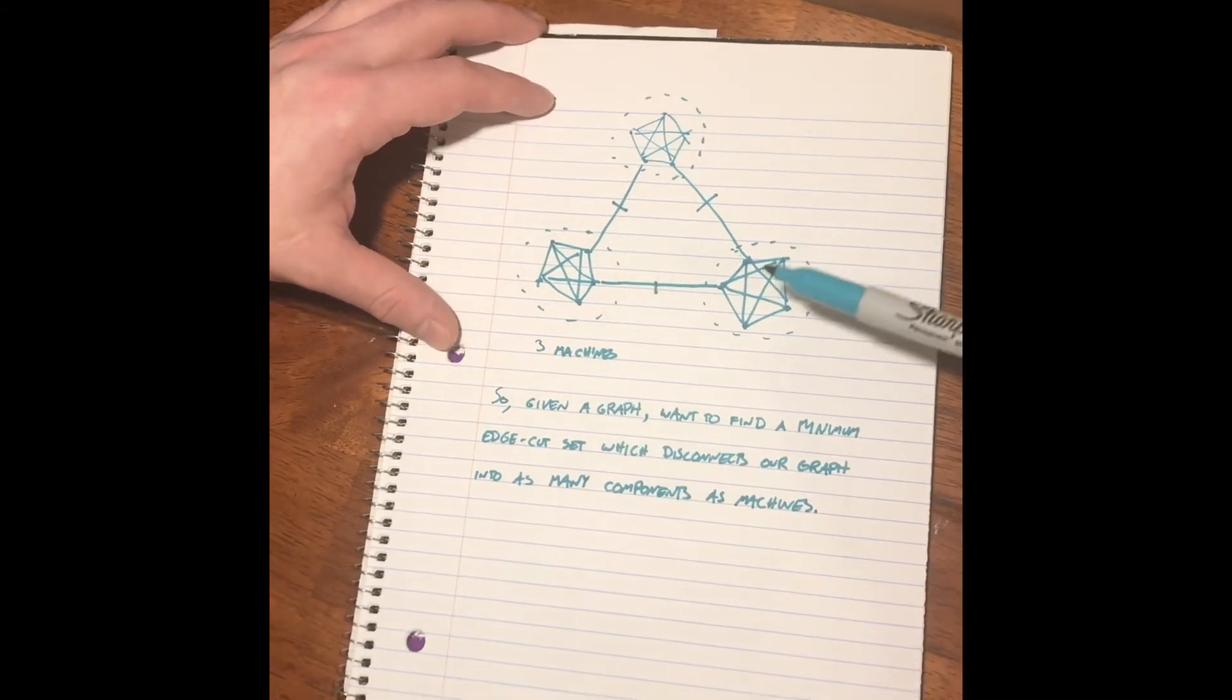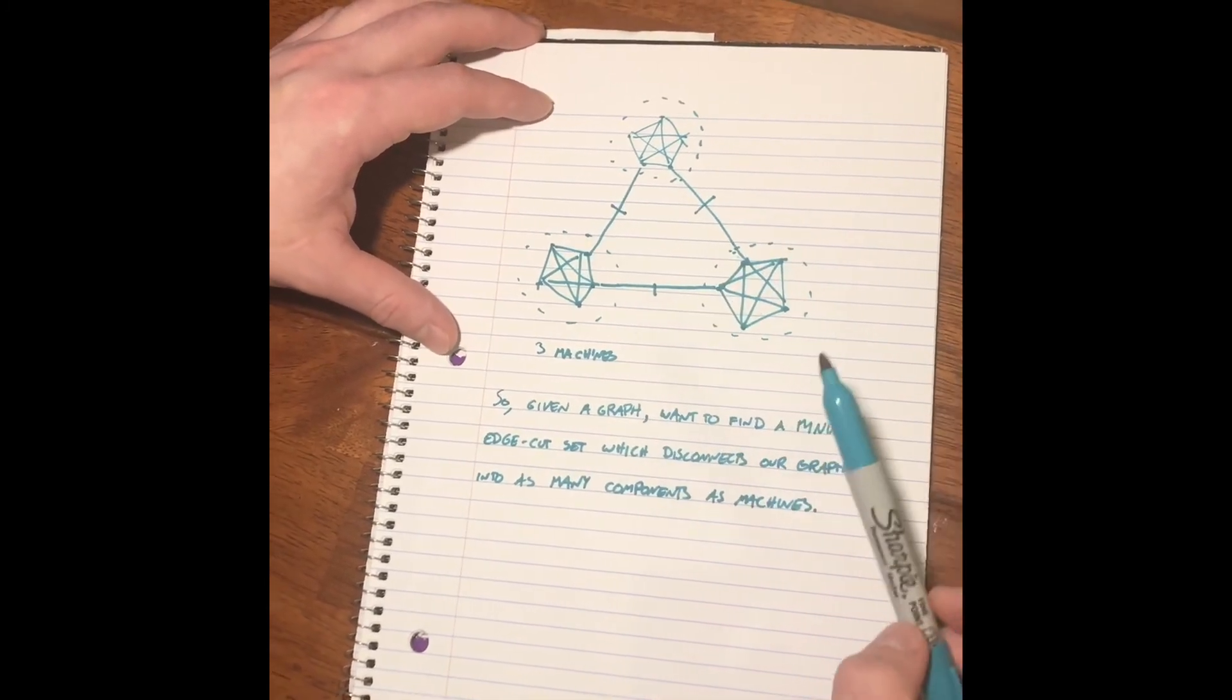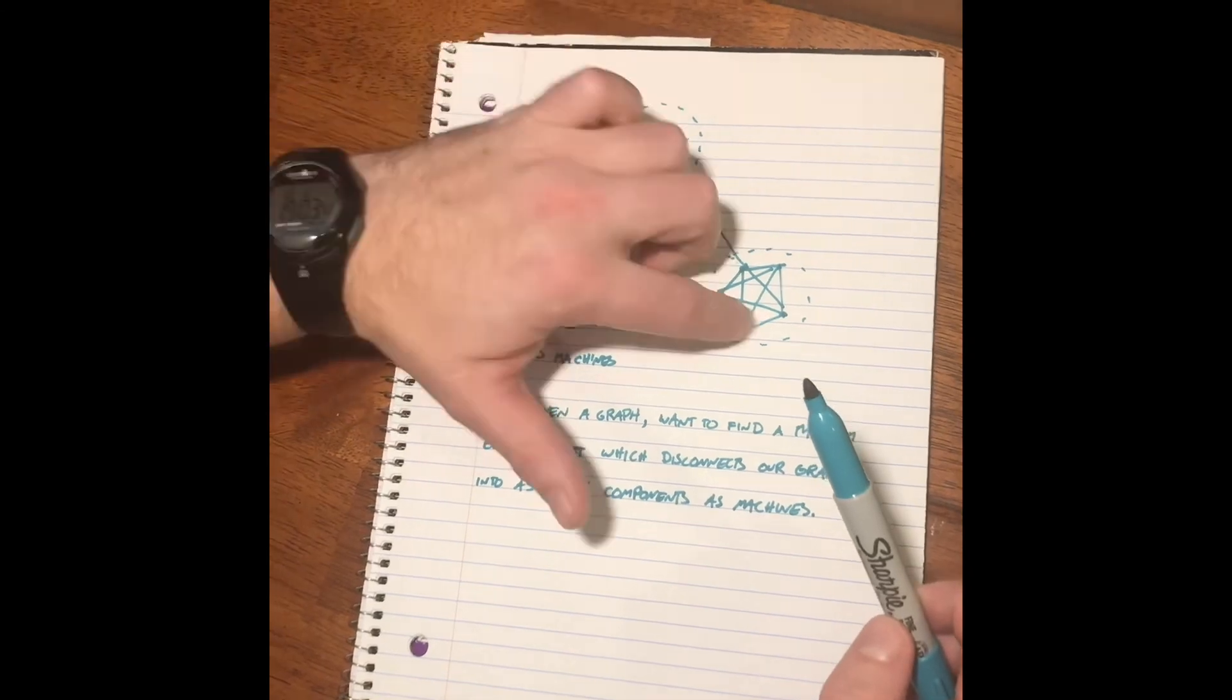And you can see up here, we had three machines. So we chose these three edges to separate the graph into these three components.